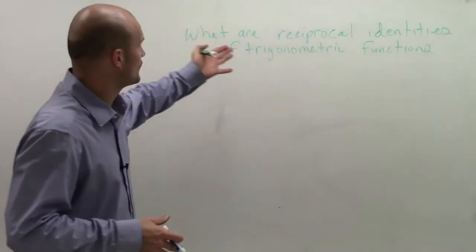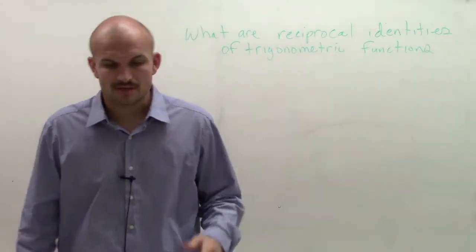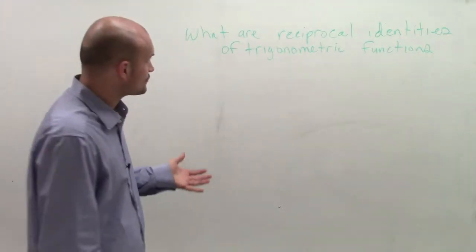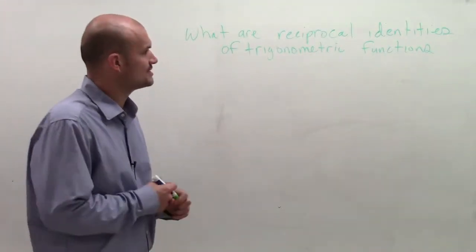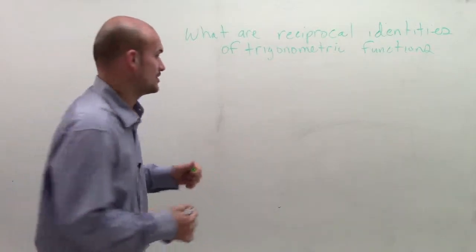All right, so what I want to go over is, what are the reciprocal identities of trigonometric functions? So when doing a problem like this, what I want to do is take a look at it and remember what, first of all, my trigonometric functions are.